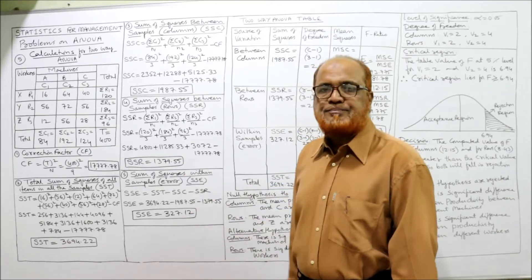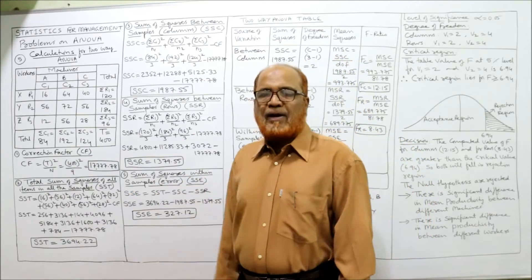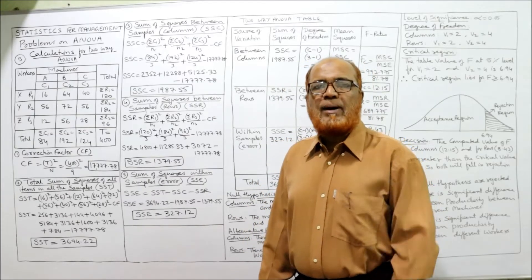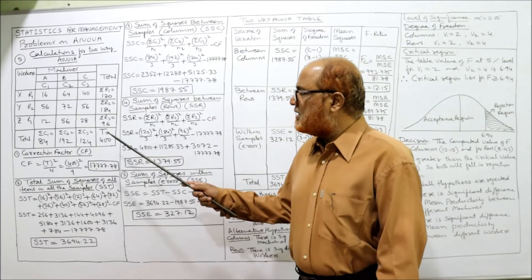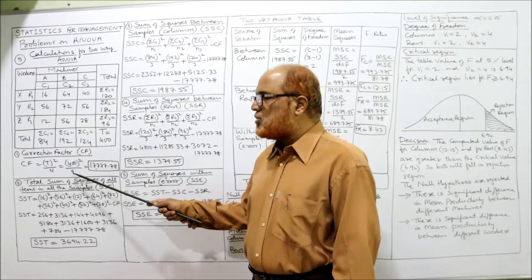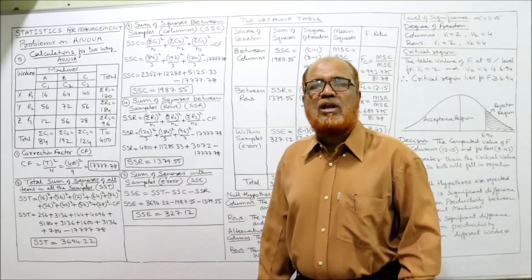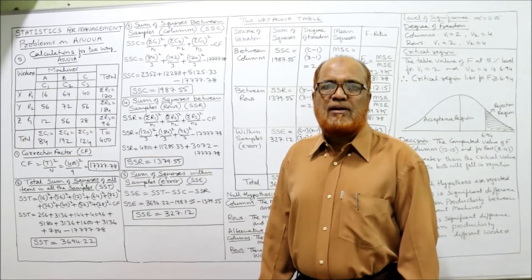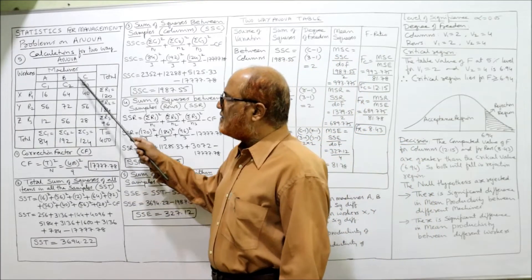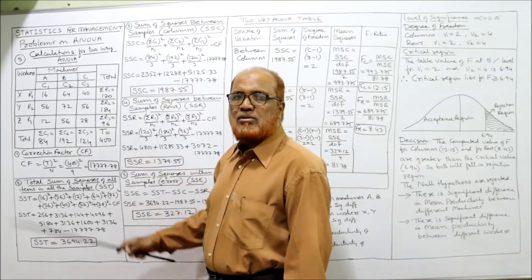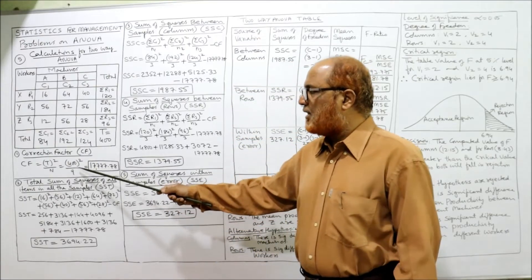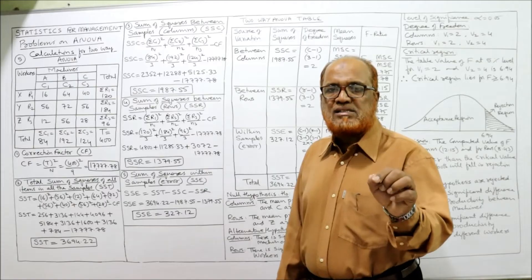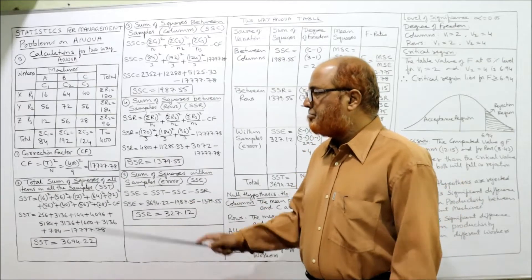Correction factor CF = T² / N. T = 400, and N = 9 (3 rows × 3 columns). So CF = 400² / 9 = 17,777.78.